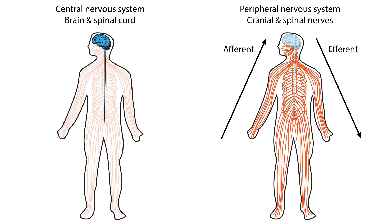When information flow is described in the nervous system, it can either be afferent communication or efferent communication, meaning it is moving from the central nervous system to the periphery.